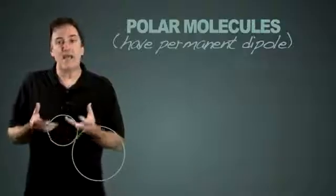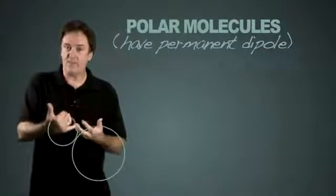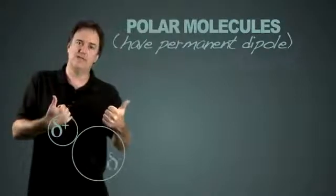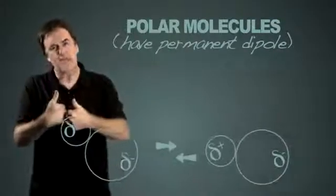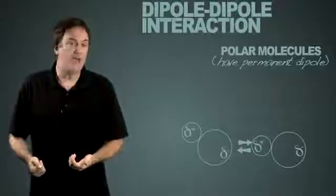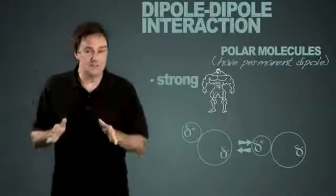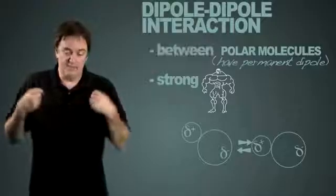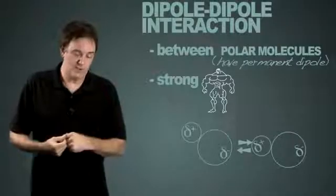And if you have a permanent dipole, you're going to have a set up within the molecule where you always have partial positive, you always have partial negative, and those are going to get together. That's called dipole-dipole interaction, and that is the strongest interaction you can have within a molecule to another molecule.